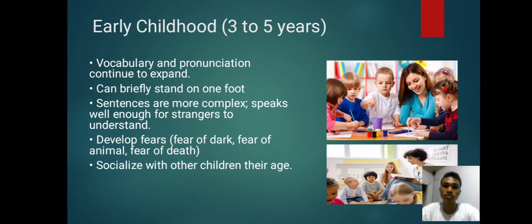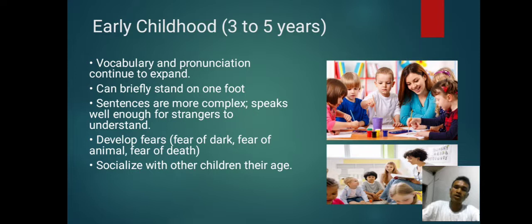Early childhood, 3 to 5 years. Vocabulary and pronunciation continue to expand and speech is deep enough for strangers to understand. Sentences become more complex. Children develop fears — fears of the dark, fears of animals, and fears of death — and they begin to socialize with other children their age.